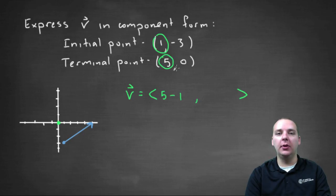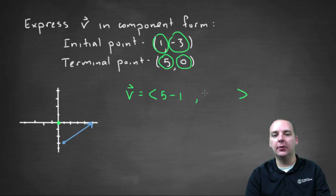And then for the second component you're going to subtract the y value, so that's zero minus negative three. Be careful with your signs and things like that.